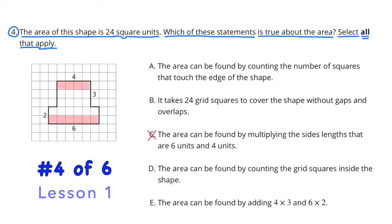C does not apply. Even though 6 times 4 does equal 24, you would need to multiply the base times the height of quadrilaterals to find the area. And in example C, they are multiplying 2 bases times one another.